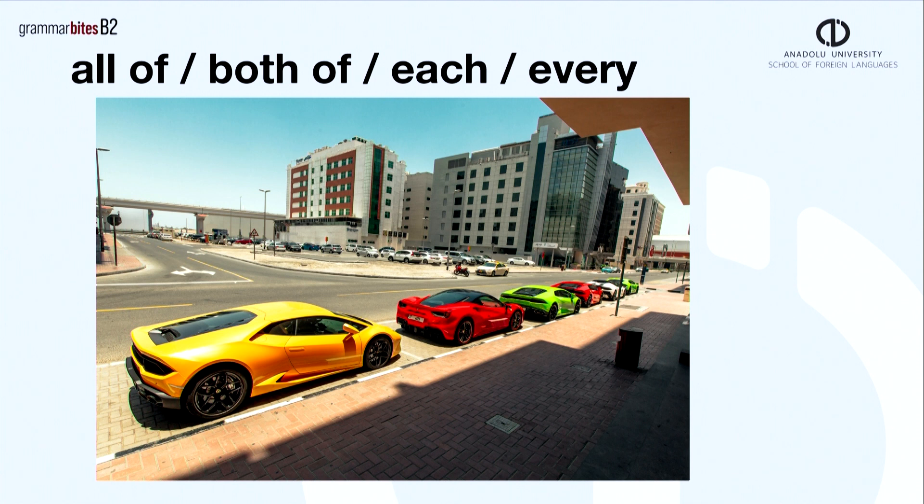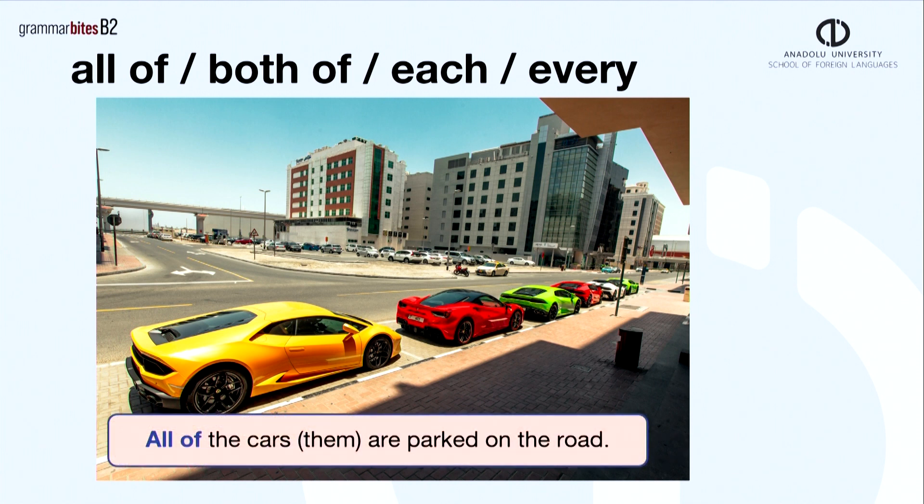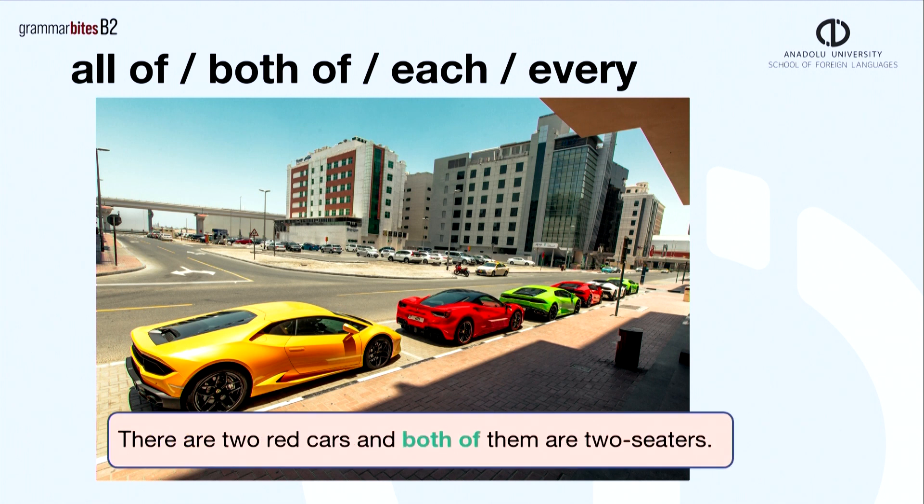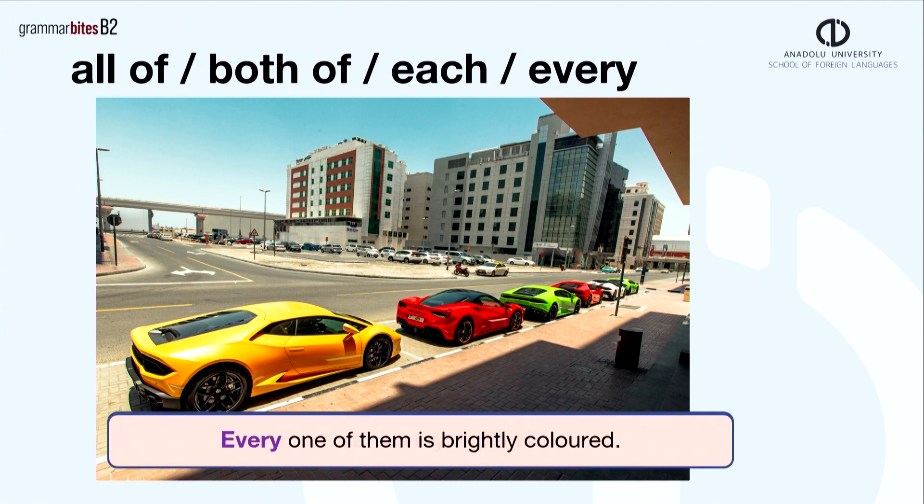Here are some examples. All of the cars or all of them are parked on the road. There are two red cars and both of them are two-seaters. Each car is very expensive. Every one of them is brightly colored.